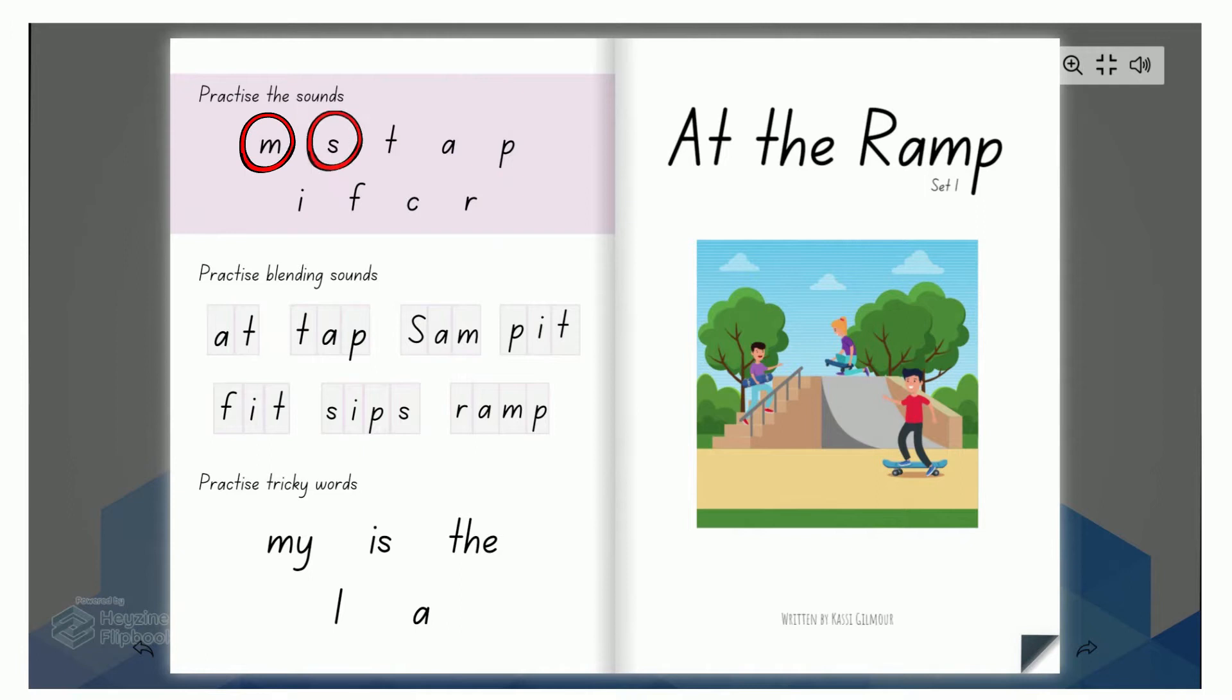You will see some letters being circled. You should recognize those because we have learned them: M, S, and A. At the ramp.